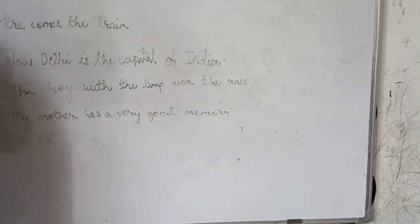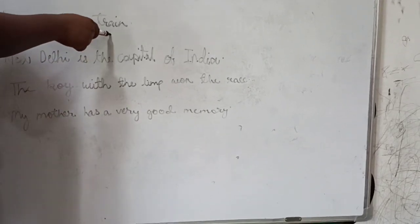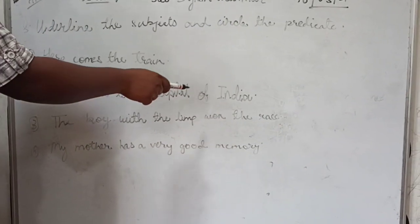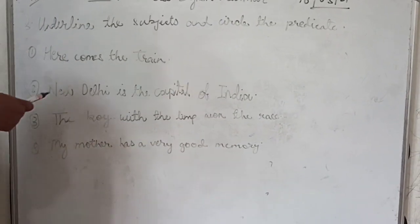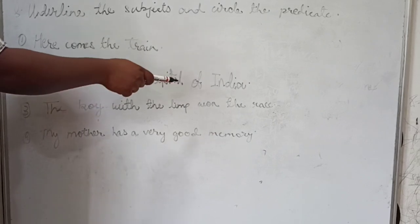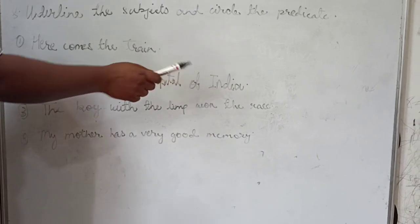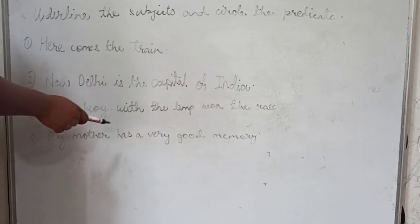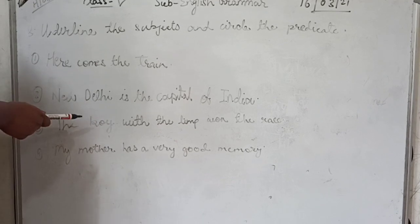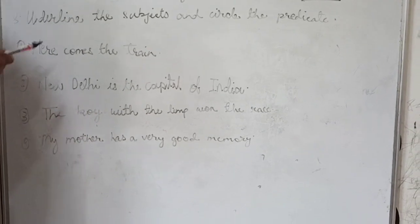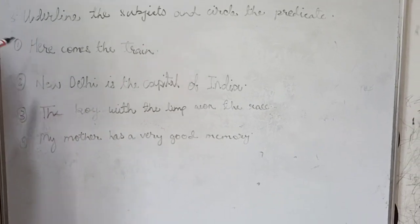Question number 1: here comes the trend. Number 2: New Delhi is the capital of India. And question number 3: the boy with the limb own the rest. And number 4: my mother has a very good memory. So, this is your question — you will try to write with correct answers.